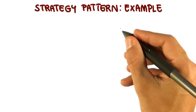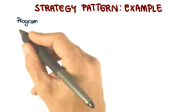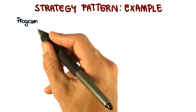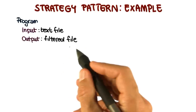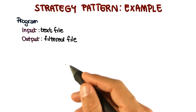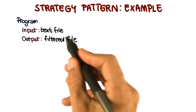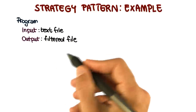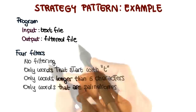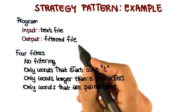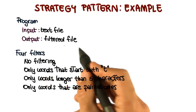Let's see how this whole thing works in practice by using an example. We're going to consider a program that takes as input a text file and produces as output a filtered file — basically it outputs a subset of the content of this text file based on some filter. We're going to have four different types of filters. The first one is no filtering, which means that the whole content of the text file will be produced on the output.